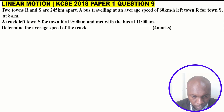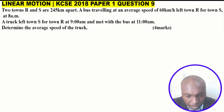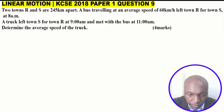Linear Motion, KCSE 2018 Paper 1, Question 9. Two towns R and S are 245 kilometers apart. A bus traveling at an average speed of 60 kilometers per hour left town R for town S at 8 a.m. A truck left town S for town R at 9 a.m. and met with the bus at 11 a.m. Determine the average speed of the truck. Four marks.